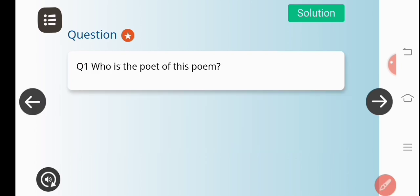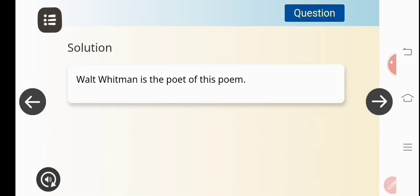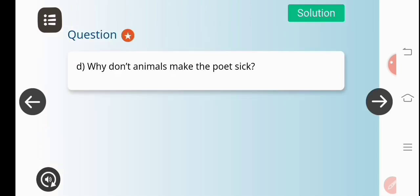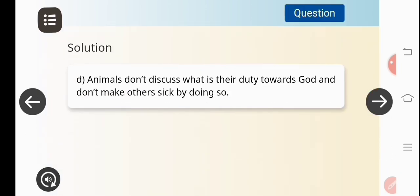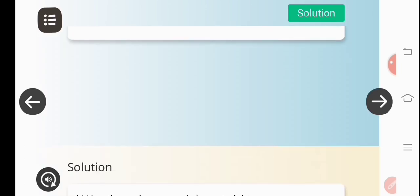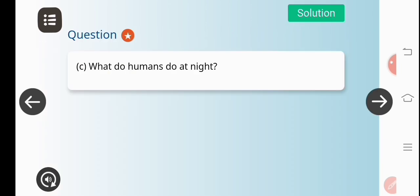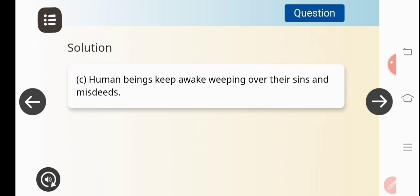I will go and see the second question. Who is the poet of this poem? You all know, Walt Whitman. The answer is Walt Whitman is the poet of this poem. We will go and see another question. Why don't animals make the poet sick? The answer was given previously. Animals don't discuss what is their duty towards God and don't make others sick by doing so. The next question is: Do animals enjoy a sound sleep at night? The answer would be yes, they enjoy a sound sleep at night. The next question would be: What do humans do at night? Human beings keep awake weeping over their sins and misdeeds.